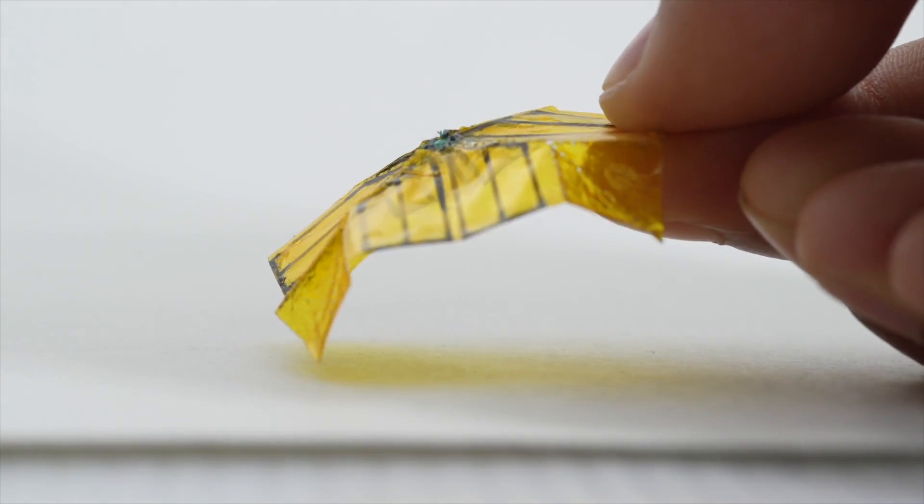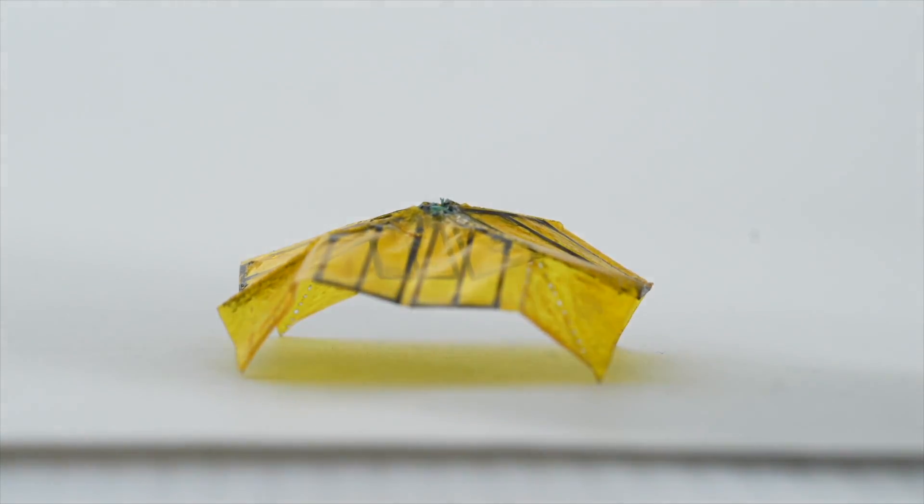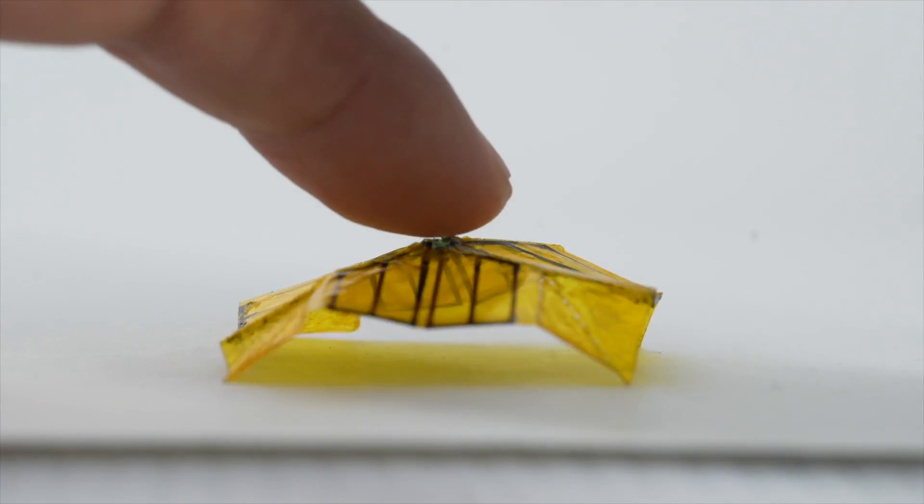For instance, leaf-out origami demonstrates bistability, meaning that it has two distinct folded shapes that requires energy to transition between.